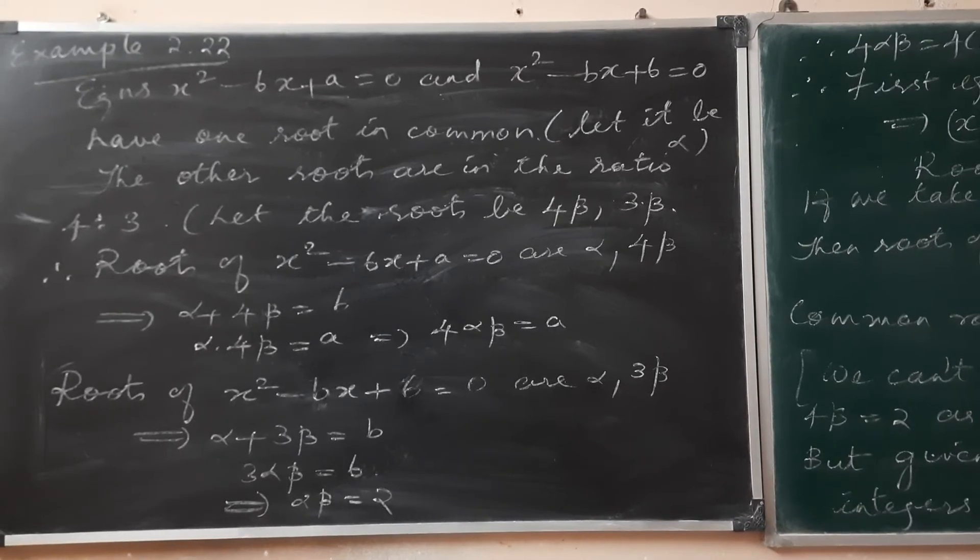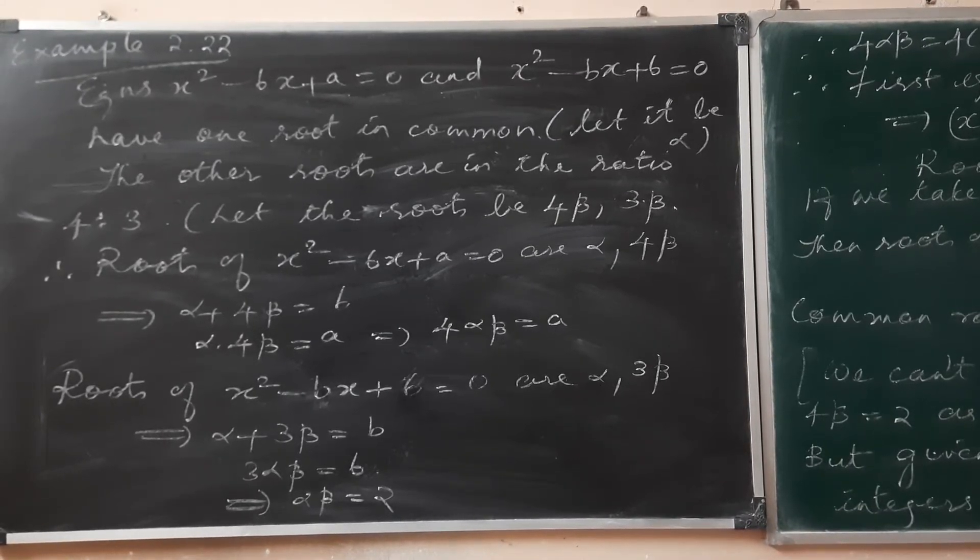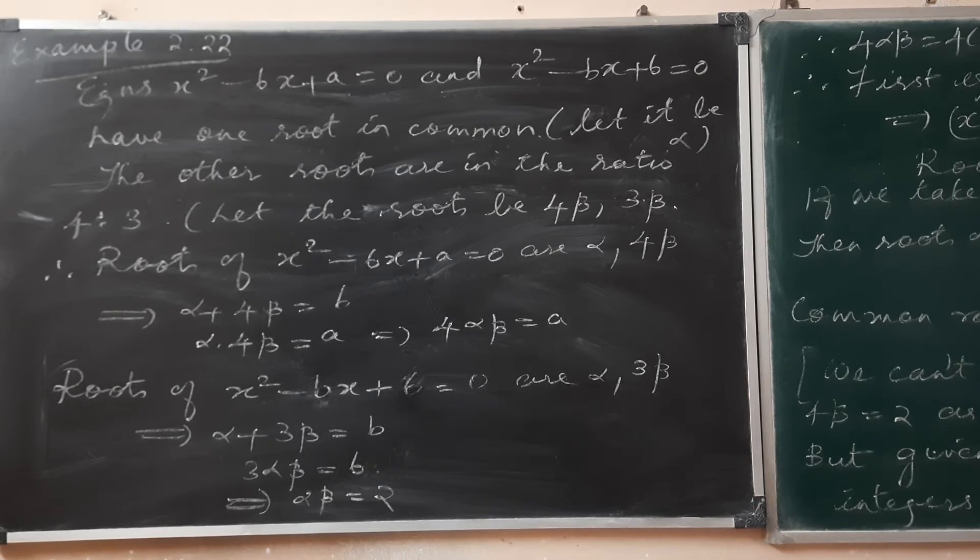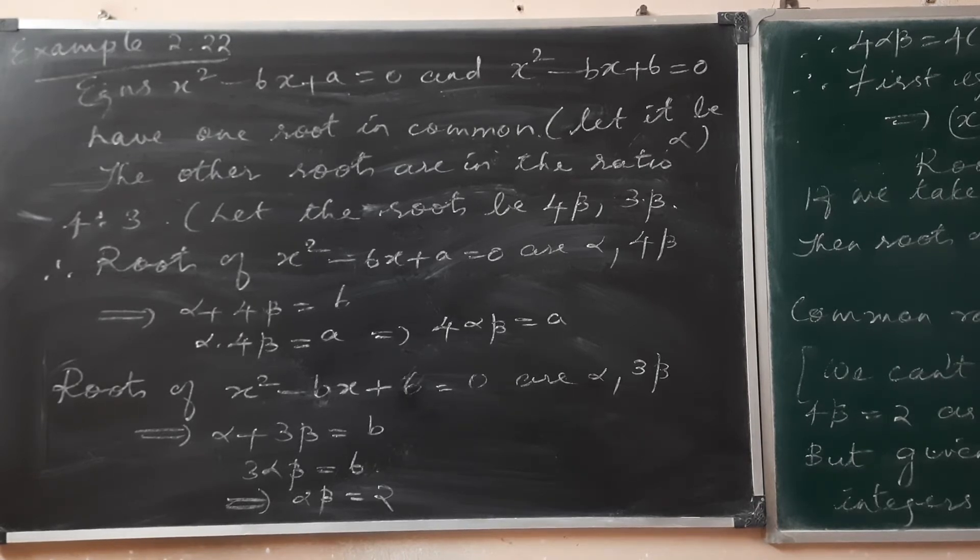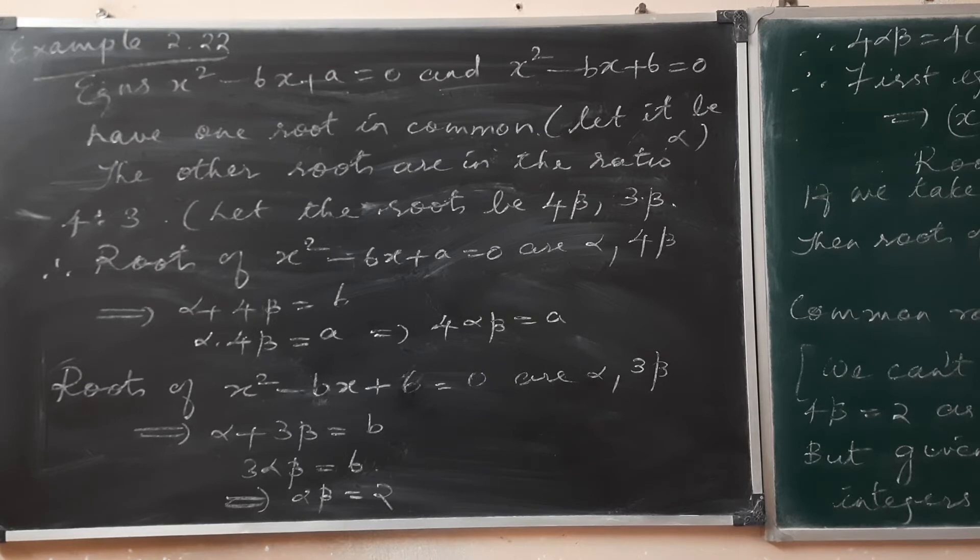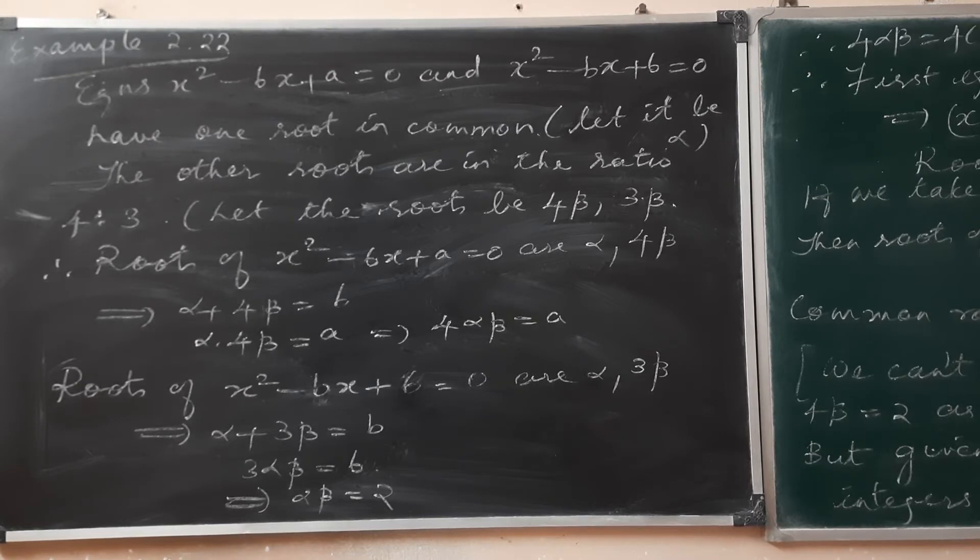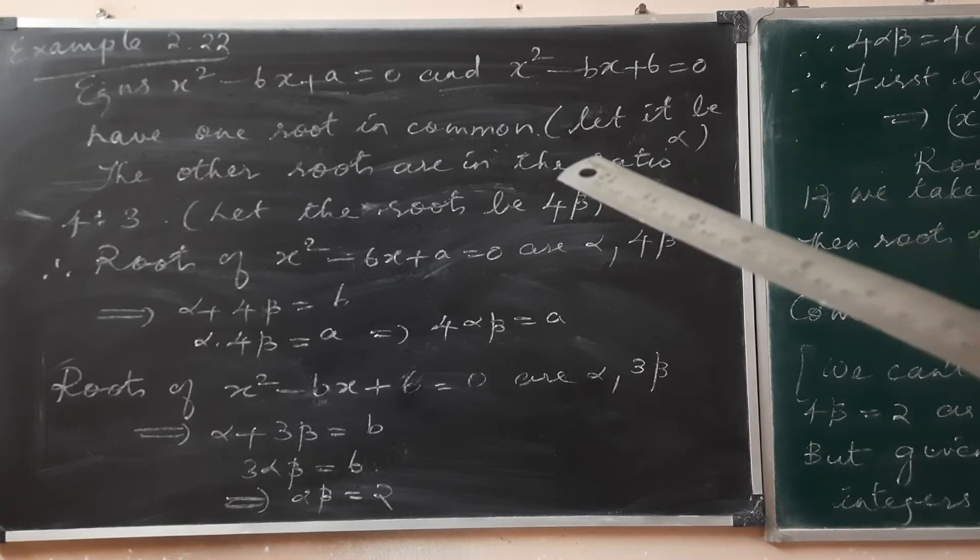Here we are solving example 2.22. Let's first read and understand the question. It's given that equations x² - 6x + a = 0 and x² - bx + 6 = 0 have one root in common.